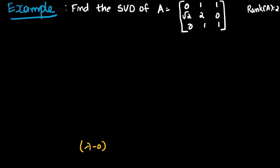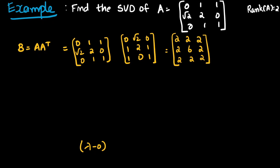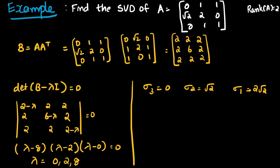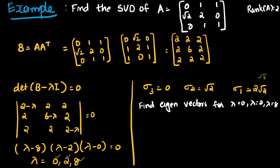Let's see an example: find the singular value decomposition of matrix A, whose rank is 2. We compute A A^T and find its eigenvalues using det(B − λI) = 0. The lambda values turn out to be 0, 2, and 8. So λ₁ = 8, λ₂ = 2, λ₃ = 0. The singular values are σ₁ = √8 = 2√2, σ₂ = √2, σ₃ = 0. We then find the eigenvectors corresponding to each lambda value to get the U₁, U₂, U₃ vectors: U₁ = [1, 2, 1], U₂ = [−1, 1, −1], U₃ = [1, 0, −1].